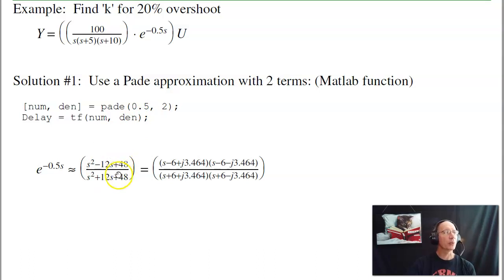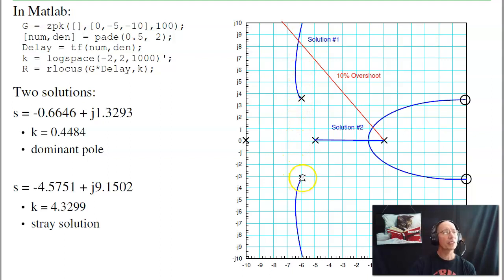The gain of the Pade approximation is always 1, because the gain of delay is 1. The phase shift goes from 0 to minus 360 degrees for this one. For an actual delay, it goes unlimited, so this will match the phase up to about minus 360 degrees. I'm adding two zeros at plus 6 plus minus j3.4, and two poles at the mirror image, minus 6 plus minus j3.4. I've got the poles of the plant at 0, minus 5, and minus 10, plus the Pade approximation for delay.